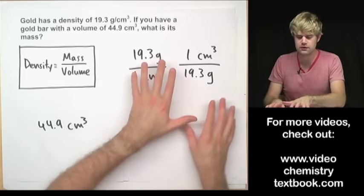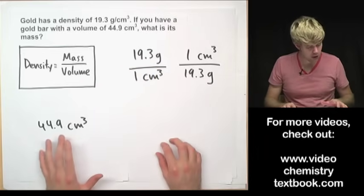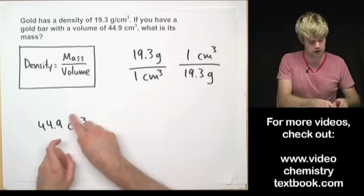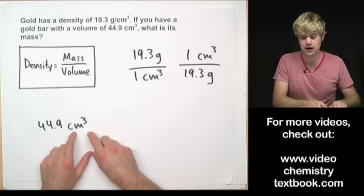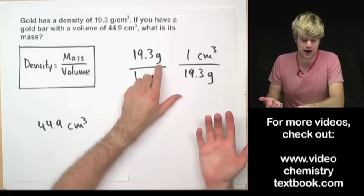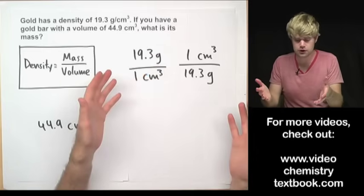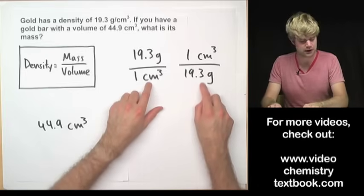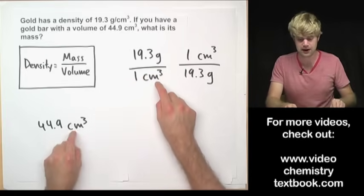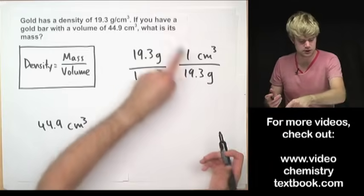The question is which of these do I want to use? I want to use the conversion factor that's going to let me cancel out the units of cubic centimeters and will leave me with units in grams which is mass. So what I'm going to want to choose is the conversion factor here that has centimeters cubed on the bottom so that it will cancel out and has grams on the top. So I'm going to choose this one.